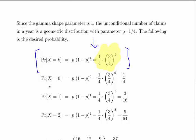We have 1 over 4 times 3 over 4 to the power of k. What we have to do is calculate that for X equals 0, X equals 1, X equals 2. Essentially, we put in the appropriate values of k in each case.